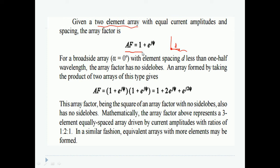I can write the array factor as equal to 1 plus e to the power j psi. Since my first element is on the origin, the phase difference would be e to the power j0, hence we just have 1. For a broadside array, alpha is 0 with element spacing d less than half wavelength. The array factor has no side lobe.